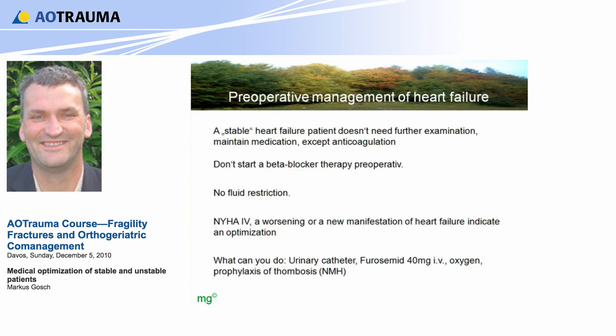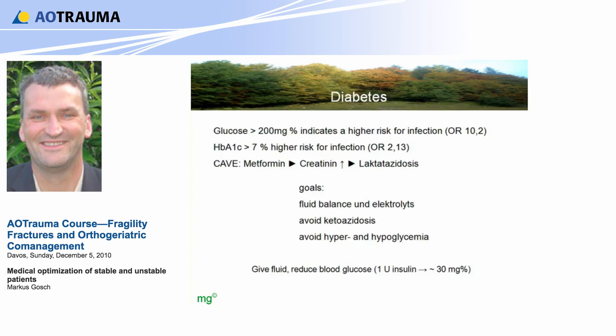In diabetes, what is the goal? Glucose should be under 200 milligram percent, because if glucose is higher it indicates a higher risk for infection — up to an odds ratio of 10. The goals are fluid balance, electrolytes, avoid ketoacidosis, and avoid hypoglycemia. Give fluid — not glucose in that case, of course — and reduce blood glucose. A very simple rule: one unit of insulin reduces blood sugar by nearly 30 milligram percent. So if you have a patient with 300, give four units of insulin, and in the next hour the blood sugar will be around 200 or 180.